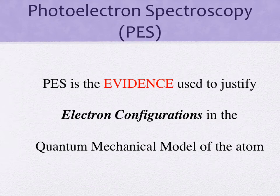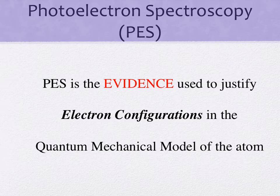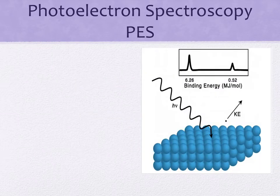PES diagrams — we need to learn how to read these. Photoelectron spectroscopy is not in your book, and it's kind of a strange thing. It's related to electron configurations. This is the evidence we use to justify the electron configurations that have different subshells at different energies and different amounts of electrons in them, so this supports the quantum mechanical model of the atom.